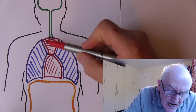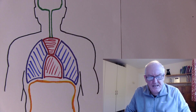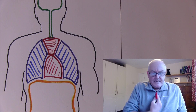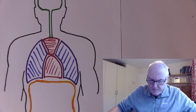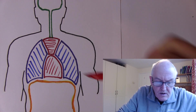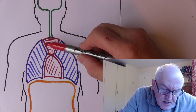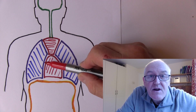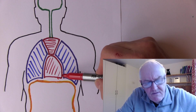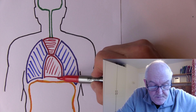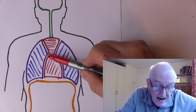In red we have the mediastinum — 'media' meaning in the middle, so it runs down the middle of the chest from the sternum all the way back to the vertebrae. It has two parts: the superior mediastinum at the top, and the inferior mediastinum below. The inferior mediastinum contains the pericardial cavity — 'peri' meaning around, 'cardiac' meaning heart — which surrounds the heart within a tough pericardial membrane.